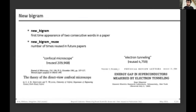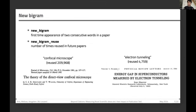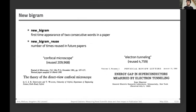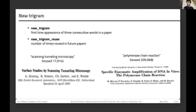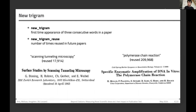The same approach applies to two consecutive words — so-called bigrams. We find the first-time appearance of two consecutive words such as 'confocal microscope' and 'electron tunneling,' and how many times they are used. We also identify trigrams — three consecutive words — such as the first-time appearance of 'scanning tunneling microscopy' or 'polymerase chain reaction.' We identify the first paper introducing these ideas and then how many times they are reused.